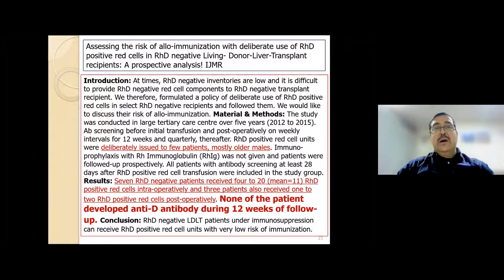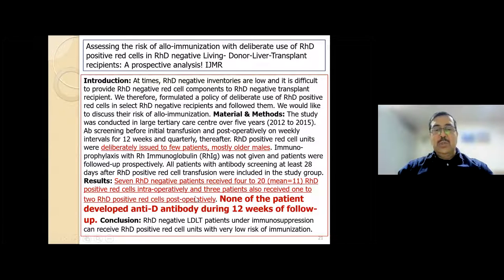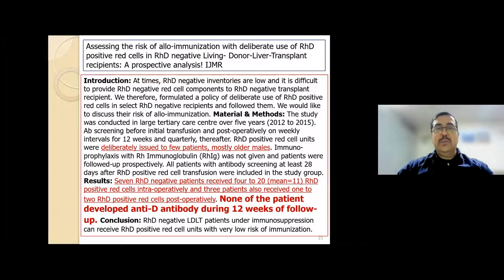One of our studies published in the Indian Journal of Medical Research showed that RHD-positive blood can be deliberately used in certain patients—elderly males awaiting liver transplant—when inventory is insufficient. Seven such patients received 4–20 RHD-positive units intraoperatively and some received 1–2 units postoperatively, yet none developed anti-D antibody during 12 weeks of follow-up. So in categories like elderly males, RH-positive can be used in RH-negative if inventory issues exist.